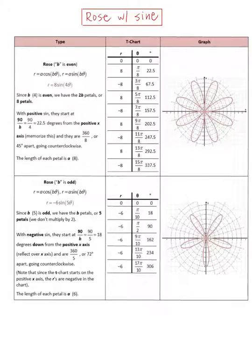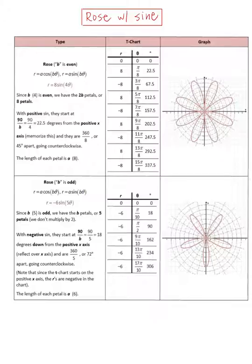Now let's look at rose curves with the sine function, separating into b even and b odd. When b is even, for example r equals 8 sine 4θ: b is 4 (even), so we get 2 times b = 8 petals. Since it's positive 8 sine, we start from the positive x-axis at 90 divided by b = 22.5 degrees. Petals are 45 degrees apart going counterclockwise. The length of each petal is a, which is 8.